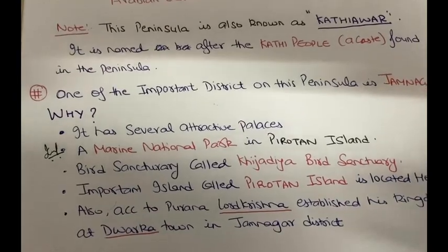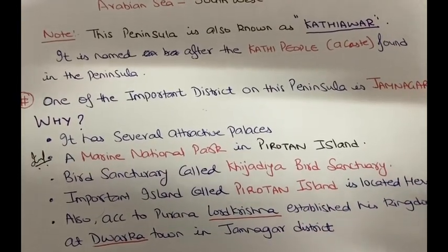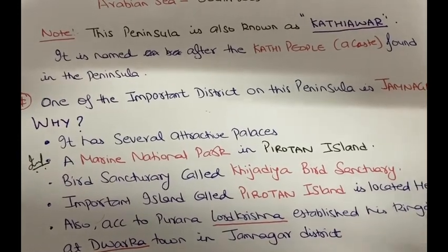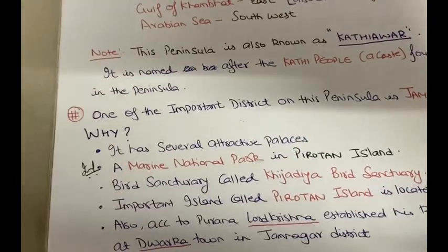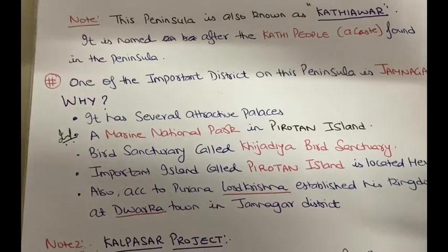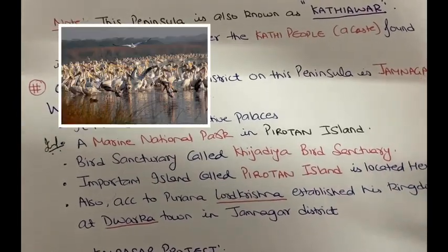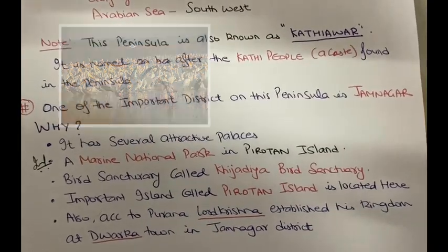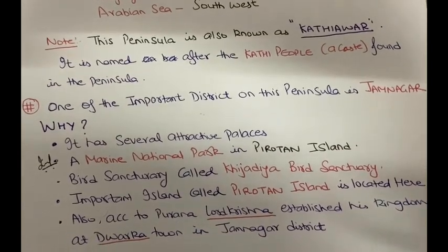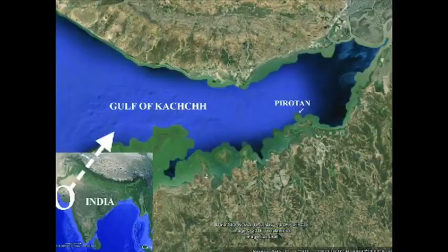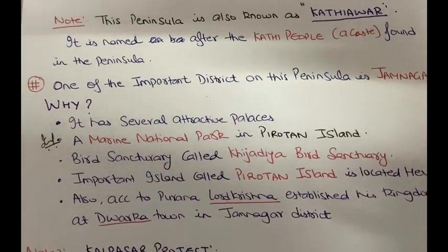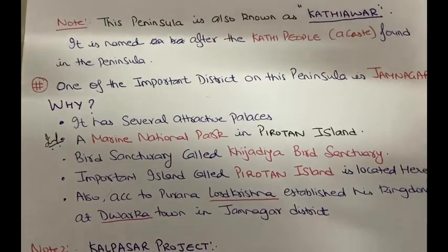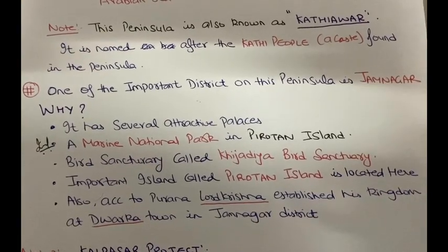There is also a famous bird sanctuary in Jamnagar called Khijadia Bird Sanctuary. Just as Rajasthan has the Bharatpur Bird Sanctuary where migratory birds come, similarly in Gujarat the important one is Khijadia Bird Sanctuary — migratory birds come here too. There are also important islands here, notably Pirotan Island. According to the Puranas, Lord Krishna's kingdom called Dwarka is located in Jamnagar district.